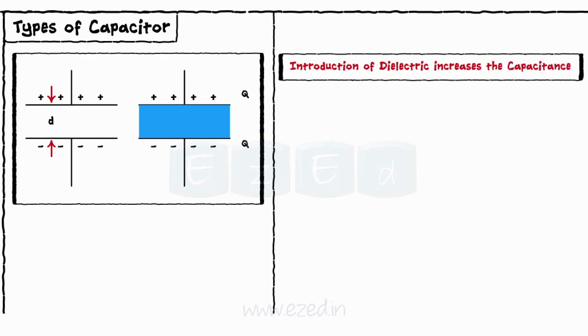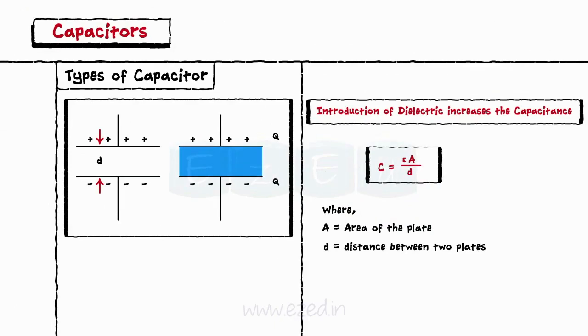The capacitance of a dielectric capacitor is calculated by a direct formula: C equals Epsilon A by D, where A is the area of plates, D is the distance between two plates, and Epsilon is the dielectric constant.